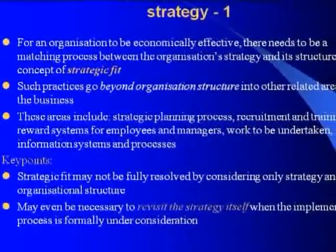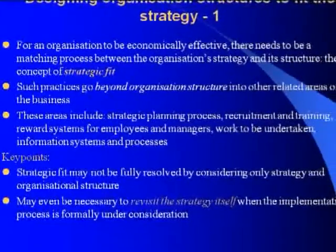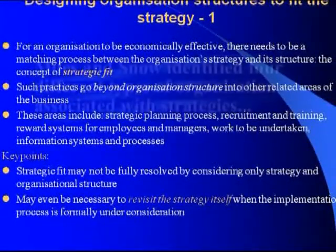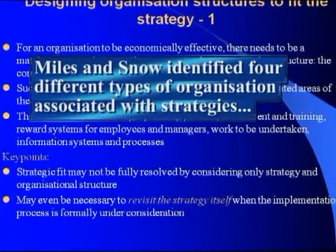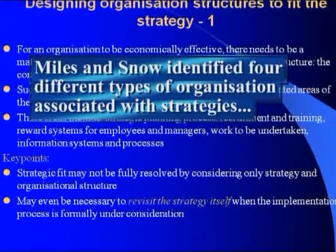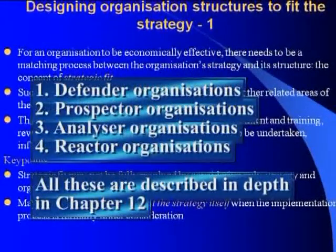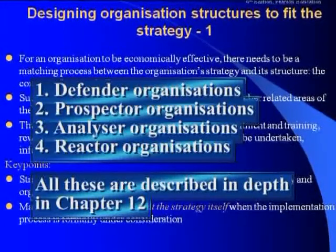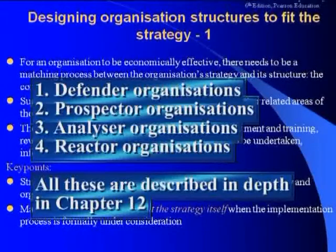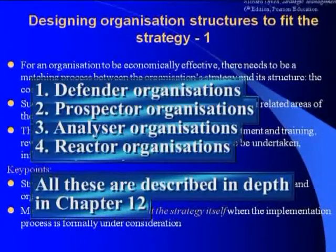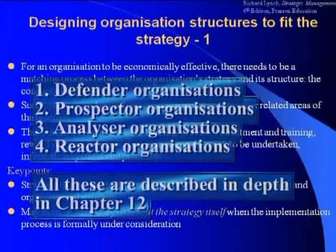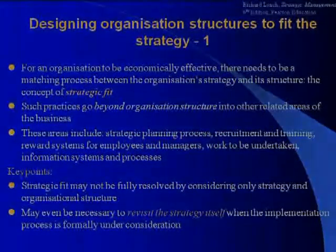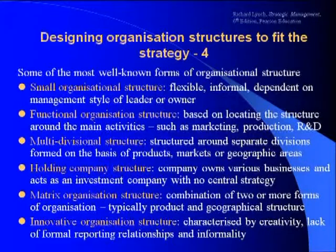Given the complexity of the relationships between strategy, structure and style, Miles and Snow identified four different types of organisation that capture these: defender organisations, prospector organisations, analyser organisations, and reactor organisations, each having associated styles of management and leadership. Turning then to the structure that is appropriate for the strategy and its relationships with strategy.